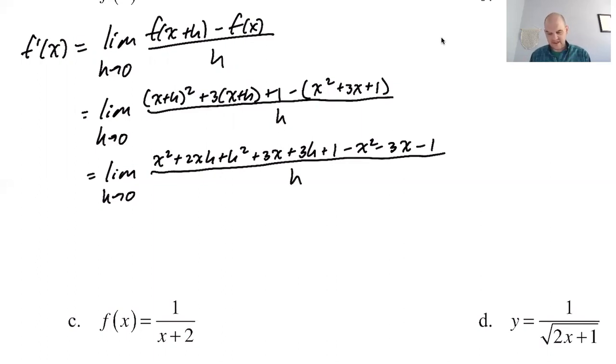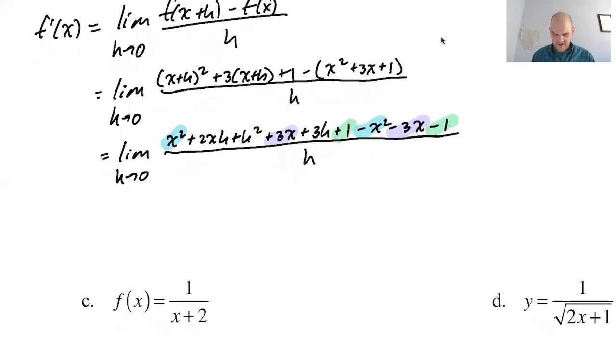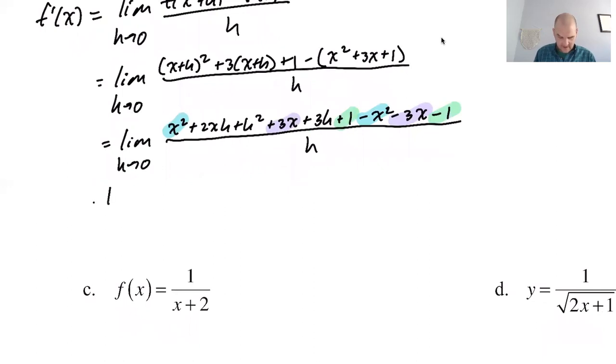All right, at this point, if everything that doesn't have an h doesn't cross out, you did it wrong. So let's look for the things that cross out. I got an x², a minus x². Great. I have a 3x and I have a minus 3x. And then we have a 1 and a minus 1. You can see the only things we didn't highlight have h's, so we didn't make a mistake. So equals the limit, I'm going to cancel one h from every term in the numerator with the h in the denominator. So 2xh over h is 2x plus h² over h is h plus 3h over h is 3. Now we take the limit, and I'll say that f prime of x is 2x + 3.